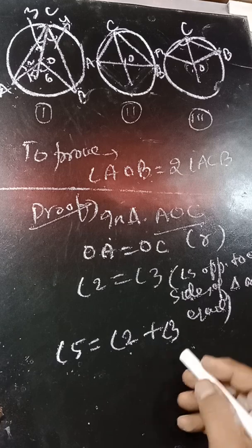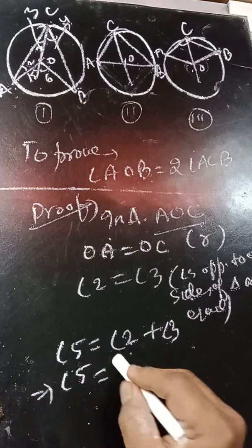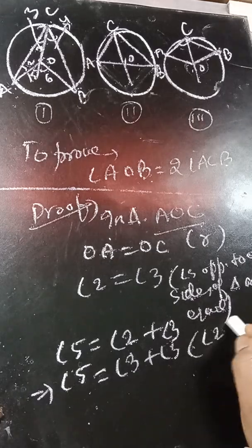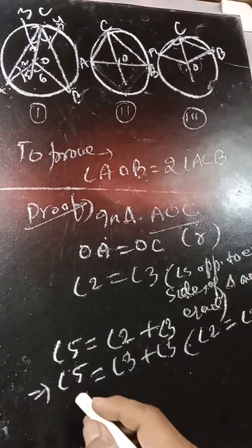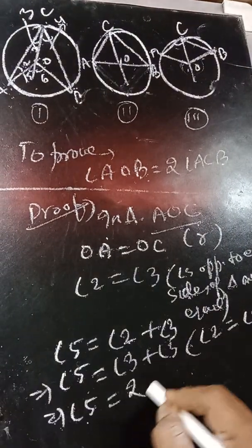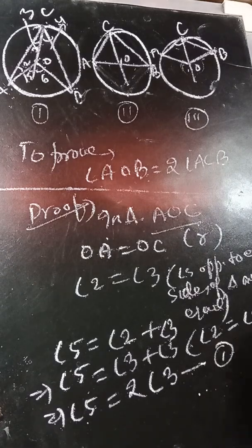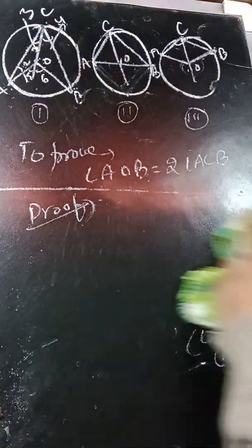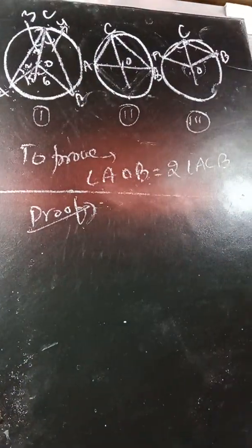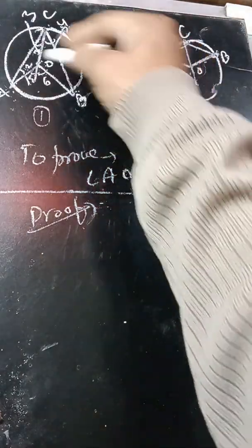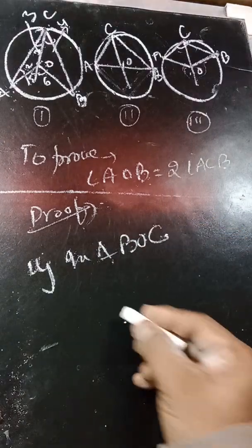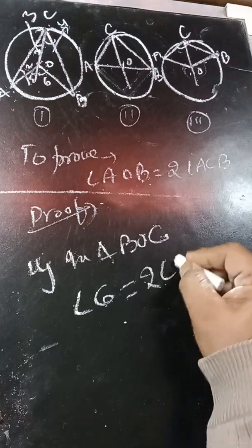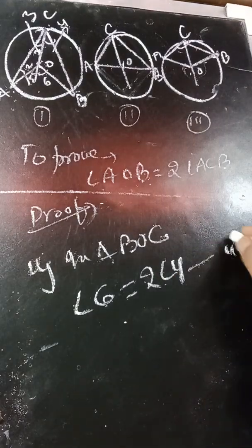We write angle 5 is equal to angle 3 plus angle 3, since angle 2 is equal to angle 3 as already proved. This gives angle 5 is twice of angle 3 — let us call this equation 1. Now, similarly, in triangle BOC, we get angle 6 is twice of angle 4. This is equation 2.